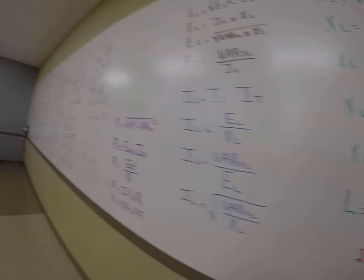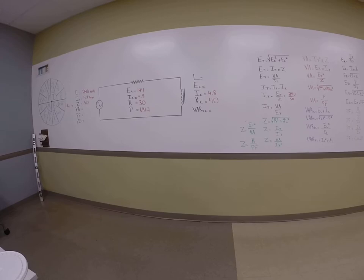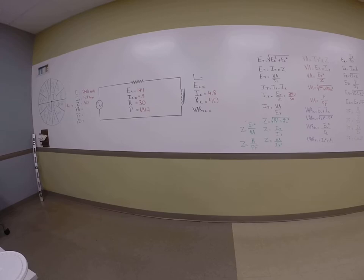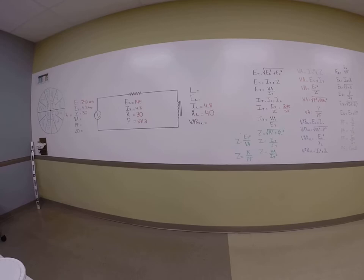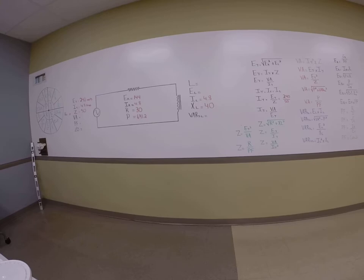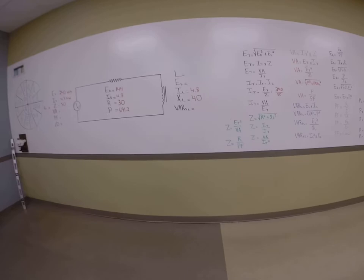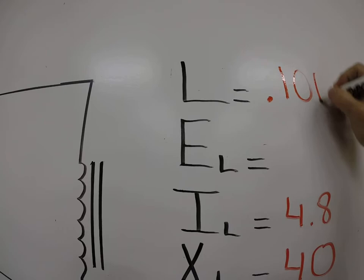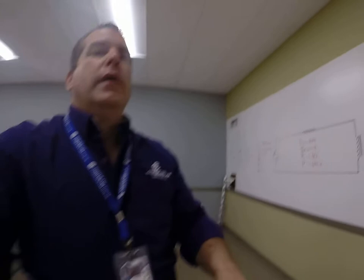2 times pi times f actually equals 377. Now all we've got to do is divide this into this. Let's go back over to our calculator. 40 divided by 377 equals 0.106. My inductance is 0.106 Henry. So far, so good. Take a breath. Because right now, we're on a good pace. We haven't seen anything too new yet, except for that last formula.